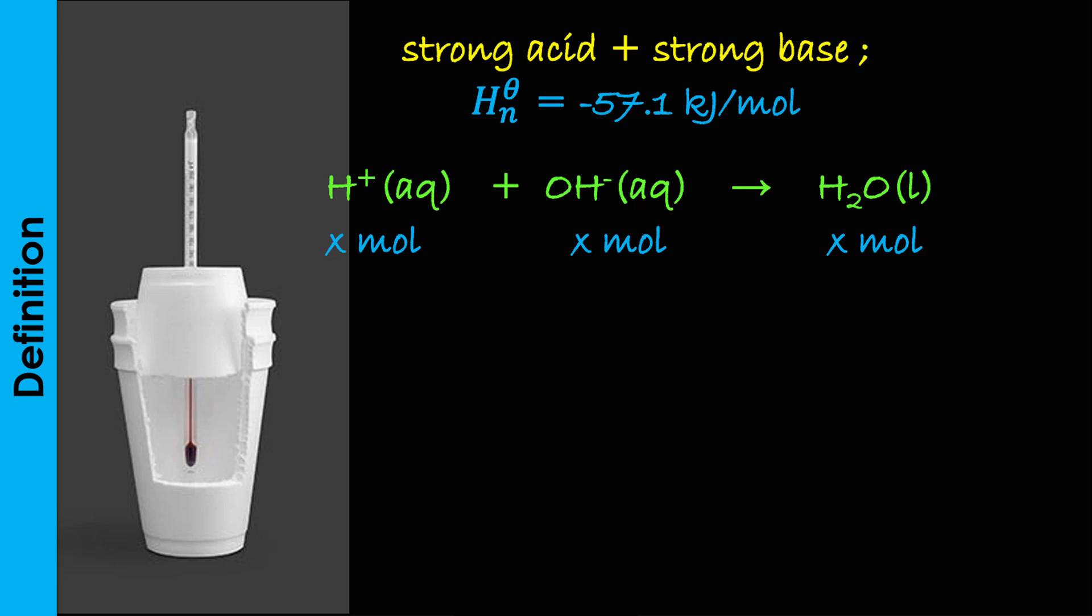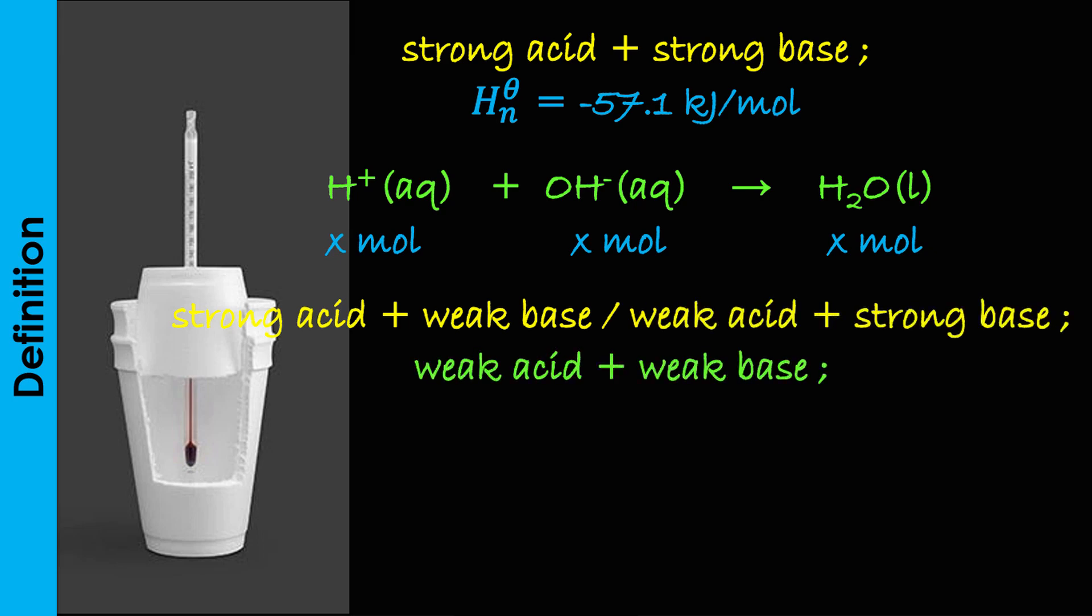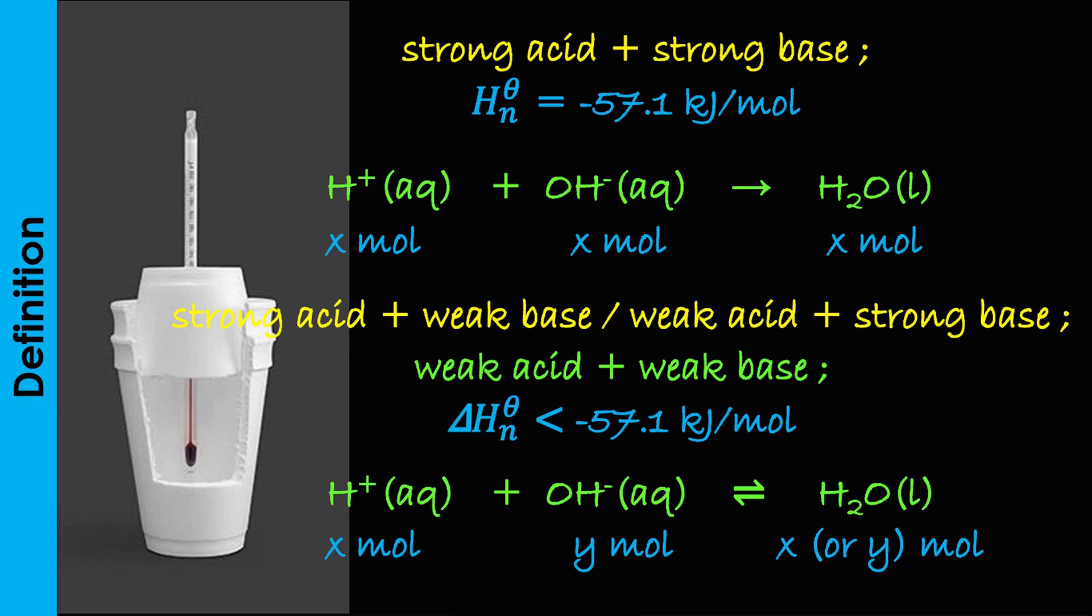Whereas, the value of the heat of neutralization between a strong acid and weak base and vice-versa, or weak acid and weak base would not be constant and will also be less than –57.1 kJ per mole. The reason being the incomplete ionization of the weak acid and or weak base. This concept can be explained as follows.